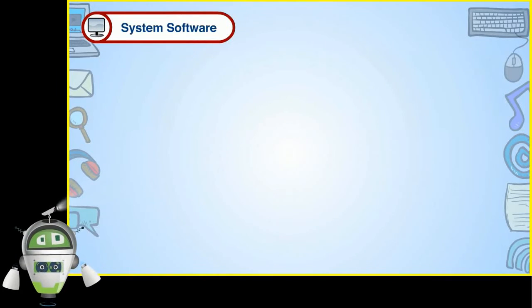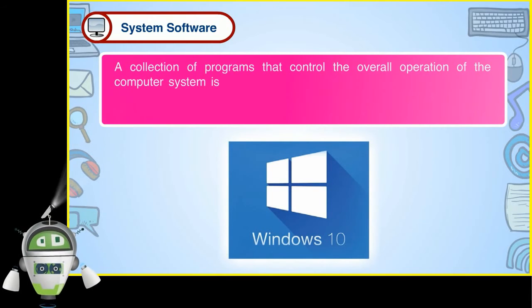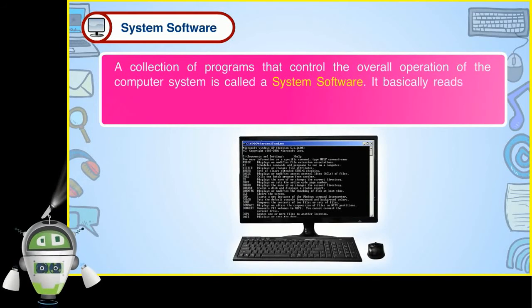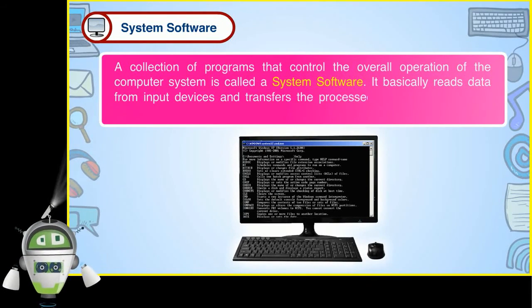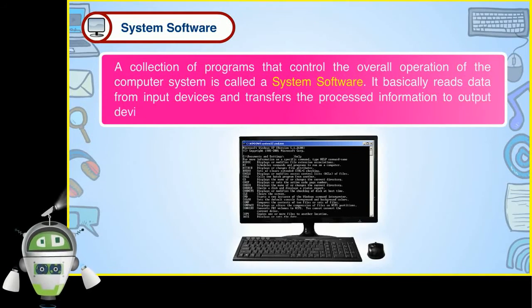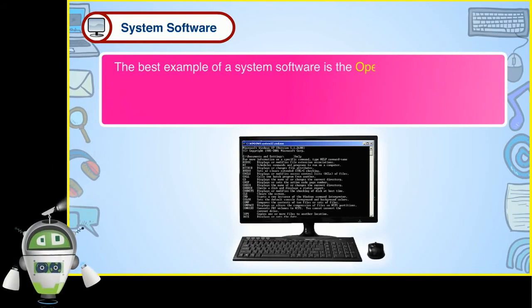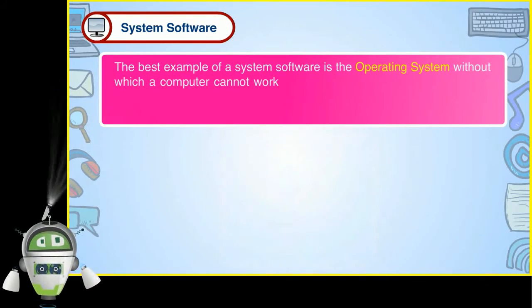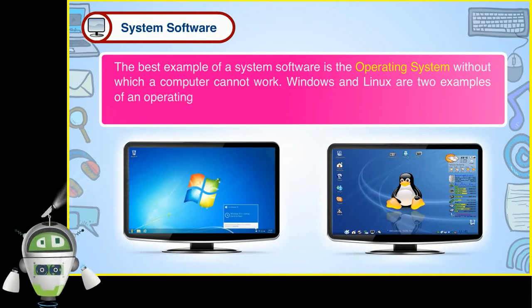System software: A collection of programs that control the overall operation of the computer system is called a system software. It basically reads data from input devices and transfers the processed information to output devices. The best example of a system software is the operating system without which a computer cannot work. Windows and Linux are two examples of an operating system.